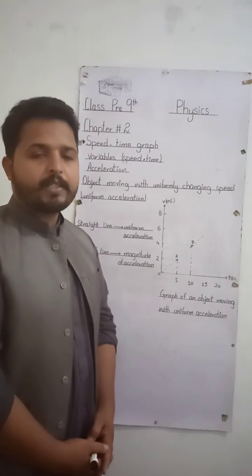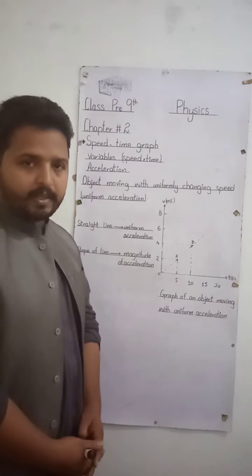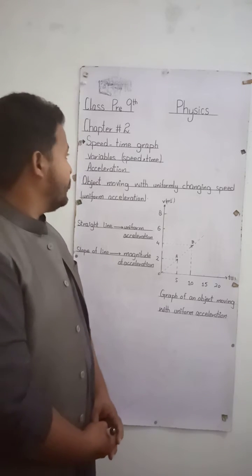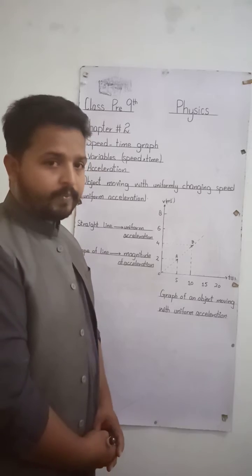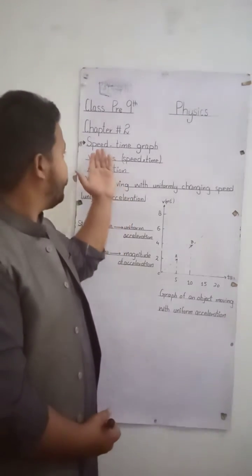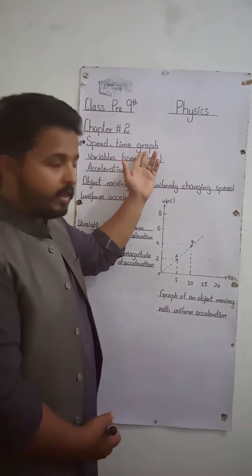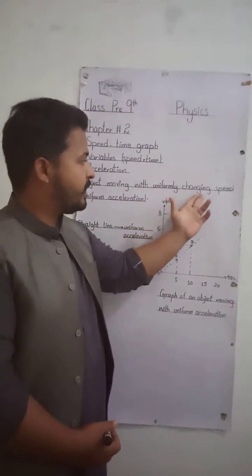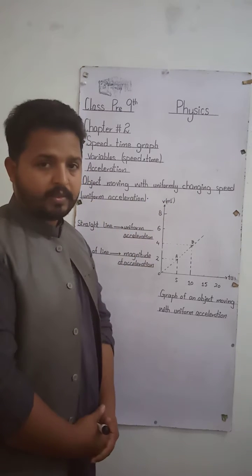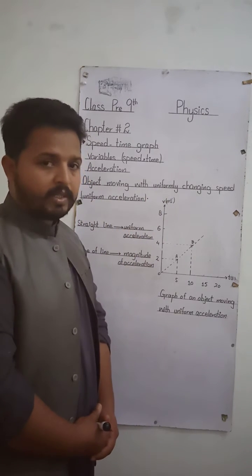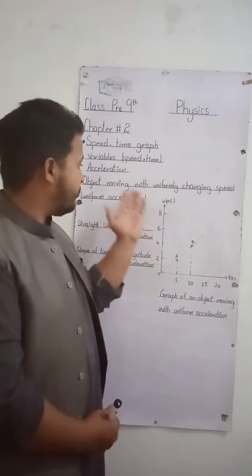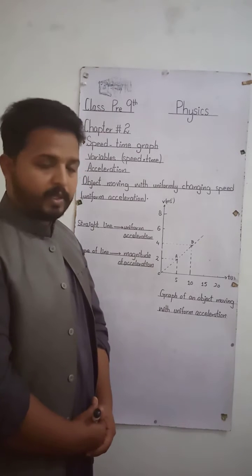As-salamu alaykum students. This video lecture is for Pre-9th Class, Subject Physics, Chapter No. 2. Today we will discuss the next portion of the speed-time graph, which is object moving with uniform changing speed or uniform acceleration. In the last video, we discussed object moving with constant speed, and today we will discuss object moving with uniform changing speed.